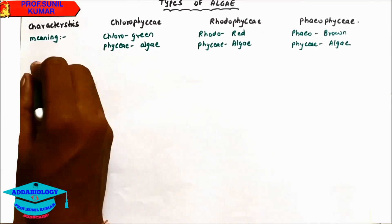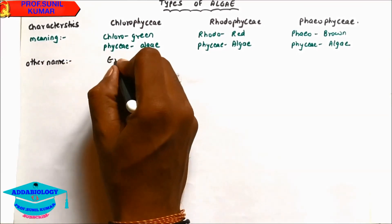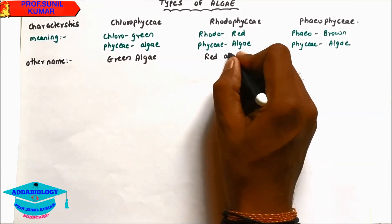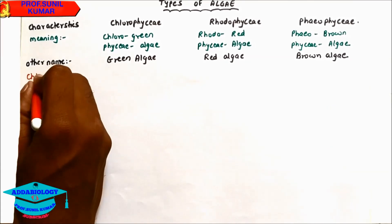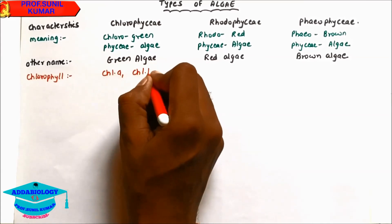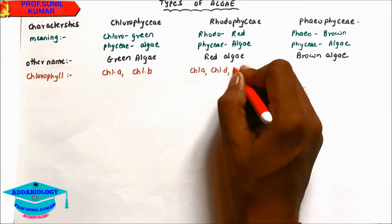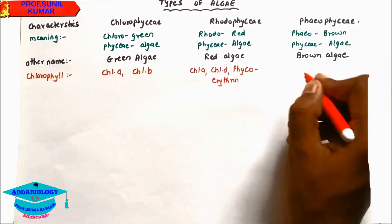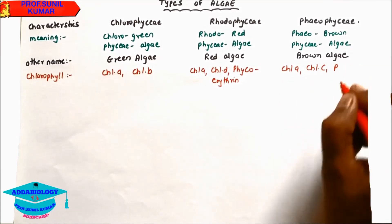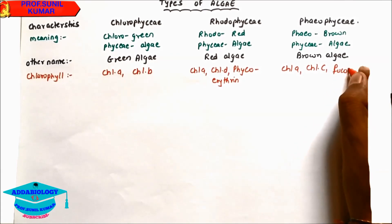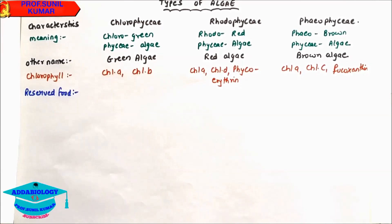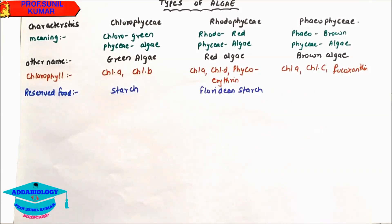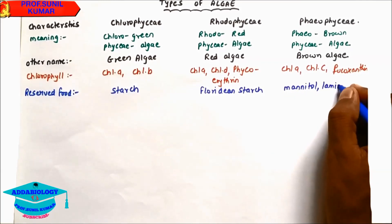The chlorophyll found in green algae are chlorophyll A and chlorophyll B. For Rhodophyceae: chlorophyll A, chlorophyll D, and phycoerythrin. For Phaeophyceae: chlorophyll A, chlorophyll C, and fucoxanthin. Reserved food for Chlorophyceae is starch; in red algae it is floridian starch; in brown algae it is mannitol and laminarian starch.